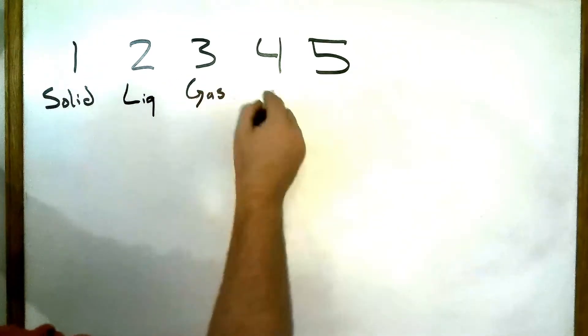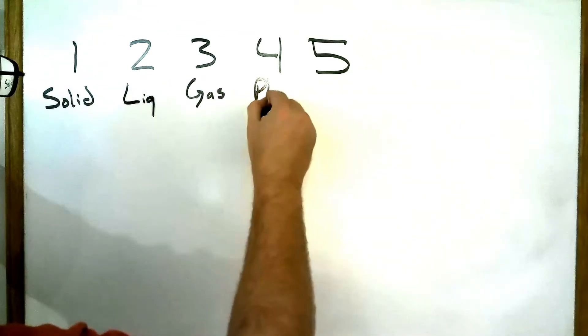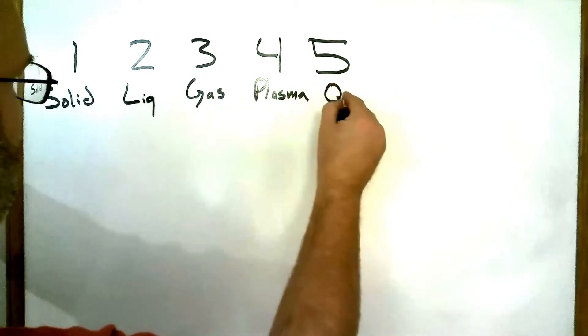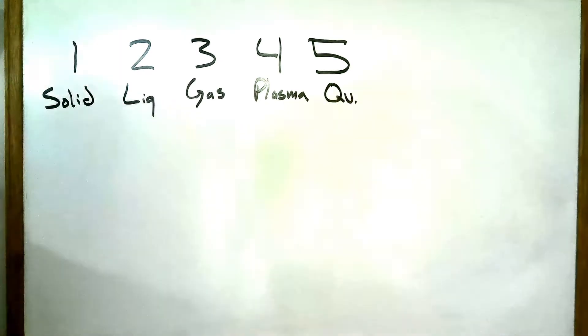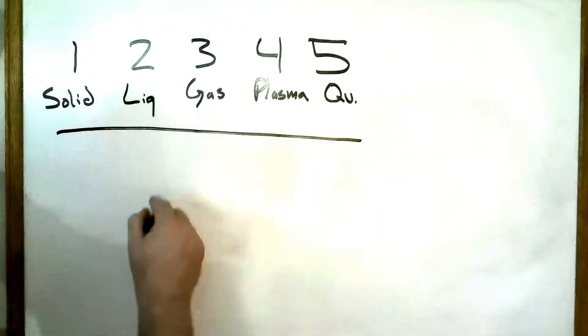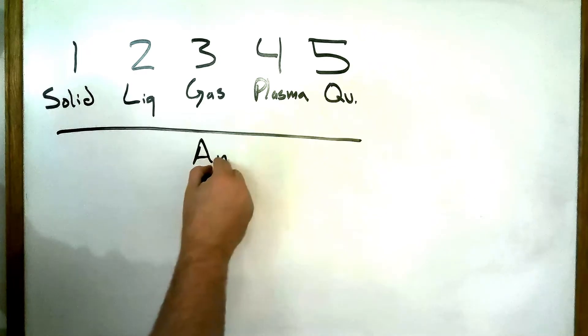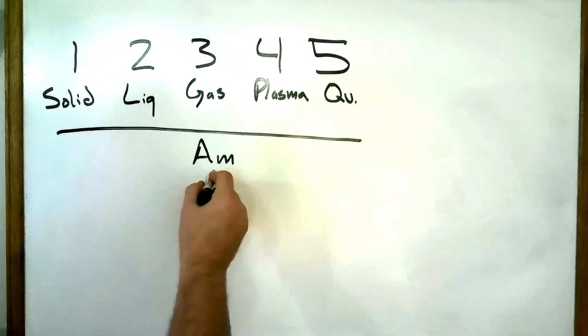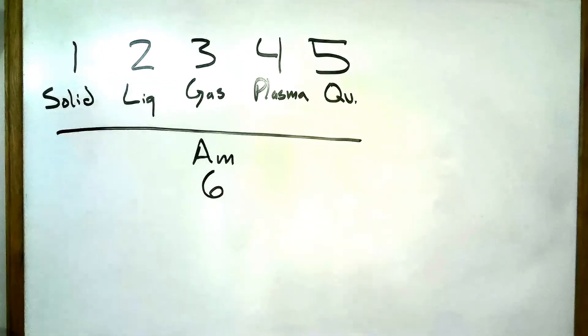So the first stage of matter is a solid, the second stage is a liquid, third stage is a gas, fourth stage is plasma, and the fifth stage is the quantum state. Now there's a sixth state which some people argue called antimatter, but it truly has no bearing on what we're going to do here. So the fourth and fifth state and even the sixth if you're understanding what it means really don't apply here.